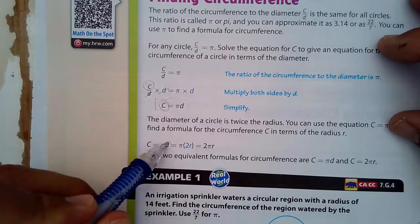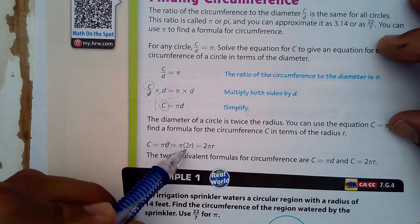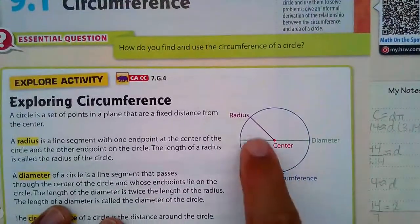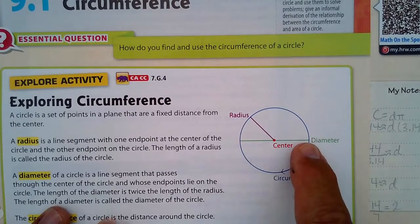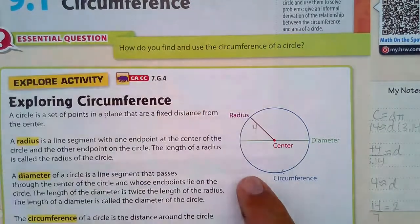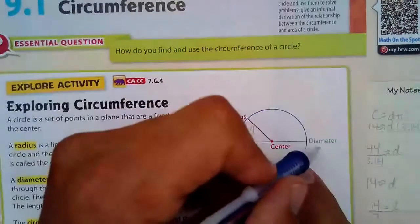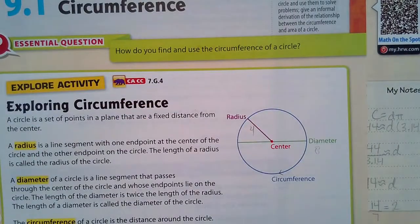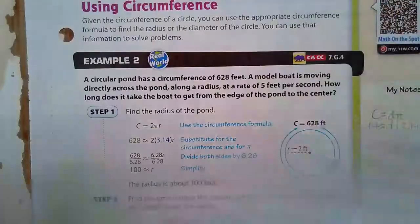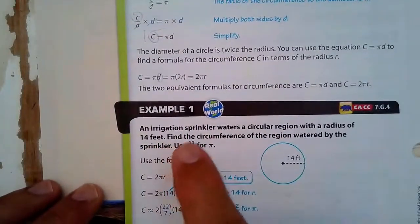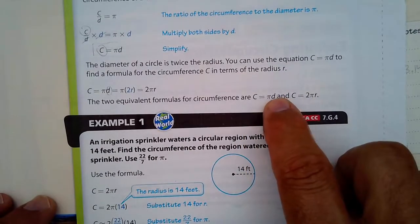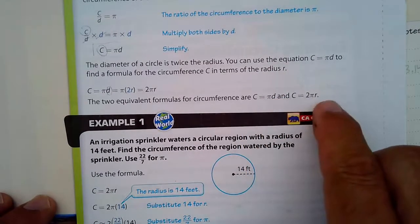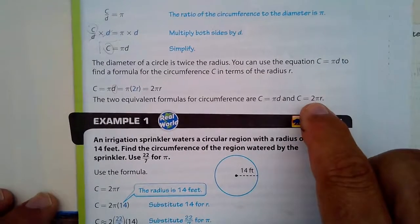The diameter is twice the size of the radius — that's a key point. The radius is half the size of the diameter. So if the radius is 4 centimeters, the diameter is automatically 8 centimeters. These two formulas are equivalent: if given the diameter, multiply by pi; if given the radius, double it and then multiply by pi to find the circumference.